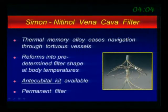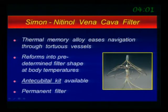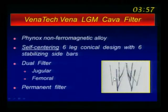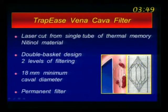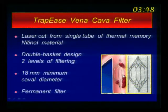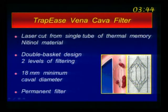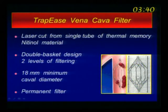All these are permanent filters. The Simon Nitinol has two double safety nets and can be inserted through a smaller introducer kit, which was very popular at some point. The vena cava filter is self-centering — though I hear it's no longer on the market. It's a French filter. And the trapeze, which was very popular because we could put it through a six-French catheter — it's a permanent filter that could also be used as a temporary filter.